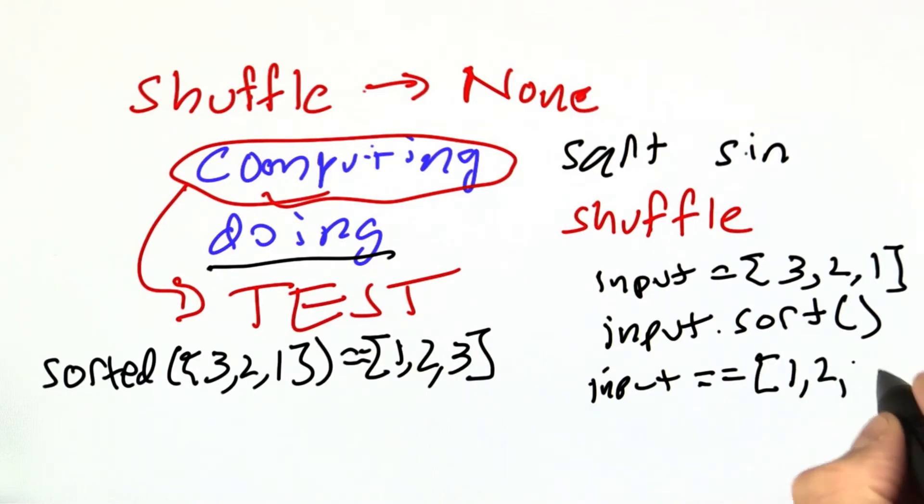Then I have to inspect the state to see what happened. I would assert that input is now equal to [1, 2, 3]. In this case, there's not that much difference. We have a library method sort and a built-in function sorted.